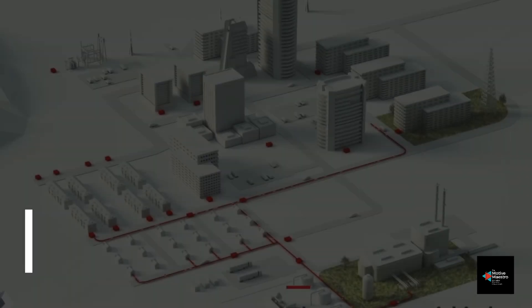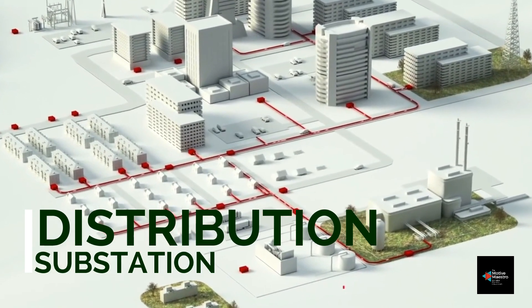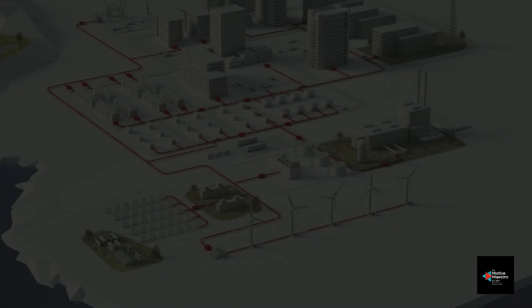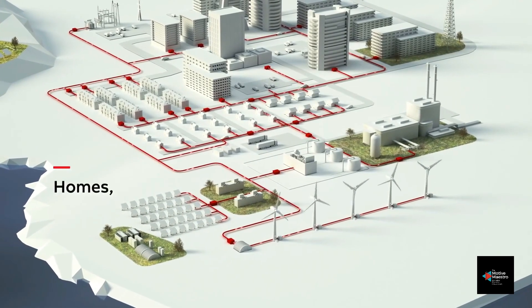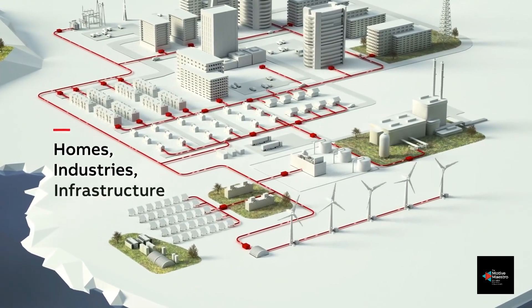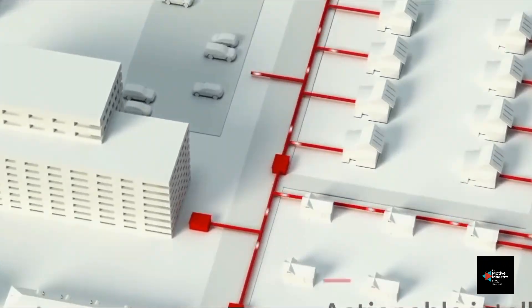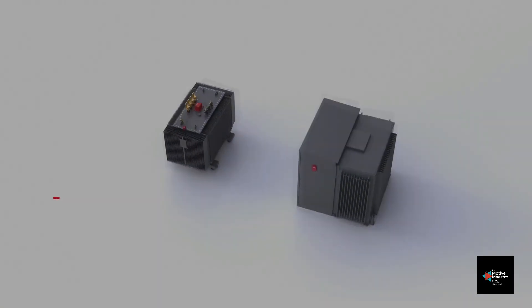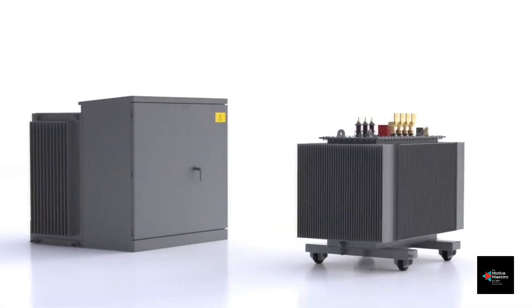Distribution substations convert the high voltage electricity coming from the transmission system to a low voltage level. Electricity at a voltage level suitable for end users is fed from distribution substations. Just like transmission substations, distribution substations also use transformers, but functioning in the opposite way — by reducing the voltage from a higher level to a lower level.